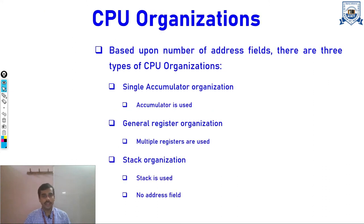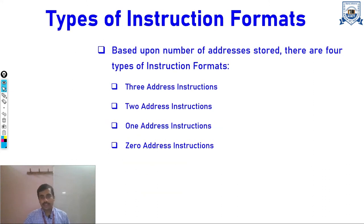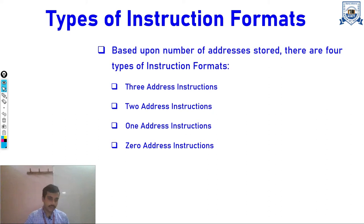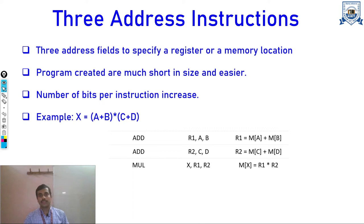Based on the number of addresses used in these CPU organizations, we have four typical types of instruction formats: three-address instructions, two-address instructions, one-address instructions, and zero-address instructions. Let's go through them one by one.